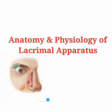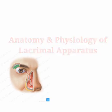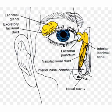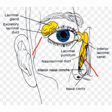Hello everyone. Today's topic of discussion is anatomy and physiology of the lacrimal apparatus. The lacrimal apparatus is one of the important parts of the eye which helps in production and drainage of tears. The lacrimal apparatus consists of two parts: the tear production system and the tear drainage system. First we'll discuss the tear production system.